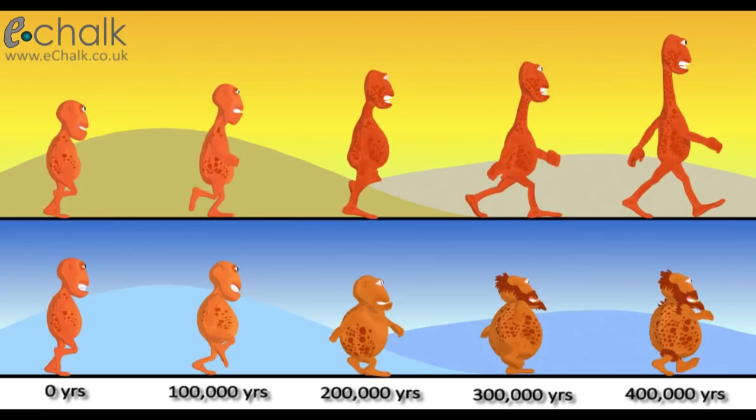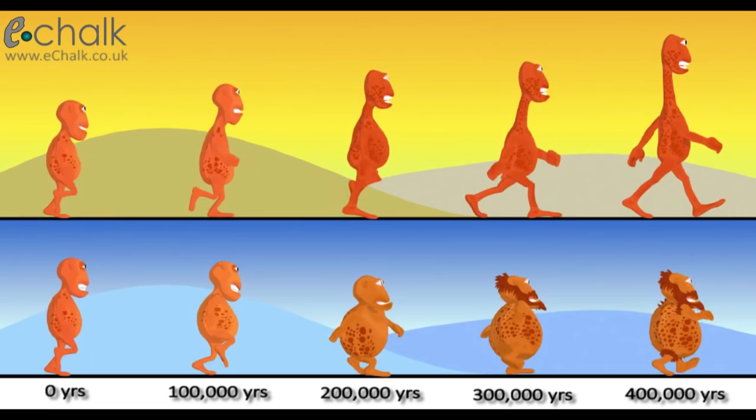Over time, the Lumpties changed so much that they finally became a new species. This is called allopatric speciation.